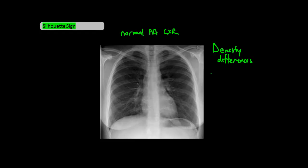For simplicity's sake, we can only see three different densities on X-ray. The first is air, which includes the lungs. Second is connective tissue — this means all tissues as well as blood and water, which should not be surprising because we all know that water makes up the majority of our body weight. And lastly, bone.